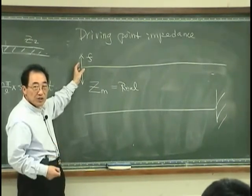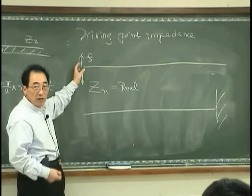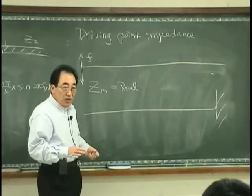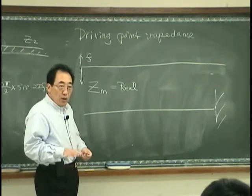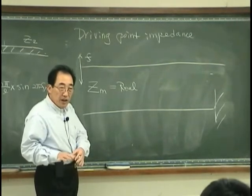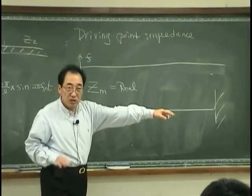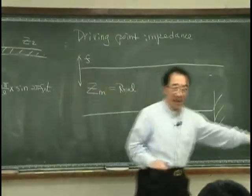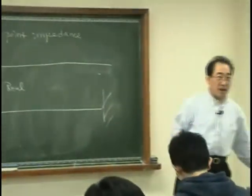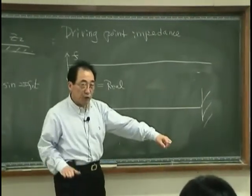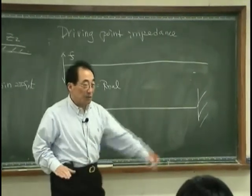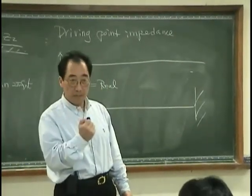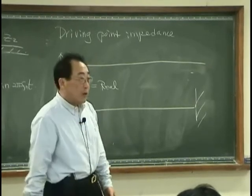When I vibrate an infinite string, what I feel is there is no resistance — when I move up, it just goes away. It's like oscillating water in an endless body of water — it just goes away and never comes back. But when you have a finite tube, when you oscillate, something is coming back and hitting you, and it might affect your excitation.